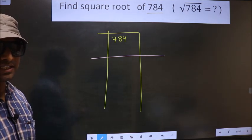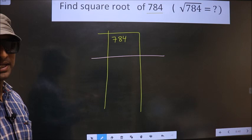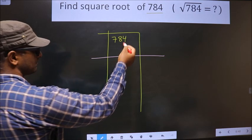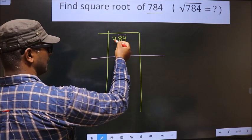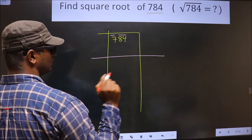Now we should divide the given number into pairs starting from this side. These two numbers one pair, and here we have only one number, so it will stay alone.